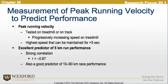Peak running velocity can be measured on a treadmill or a track by progressively increasing speed. It is the highest speed that can be maintained for greater than 5 seconds. It is an excellent predictor of 5-kilometer run performance, with a strong correlation of negative 0.97, and is also a good predictor of 10 to 90 kilometer race performance.